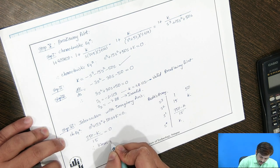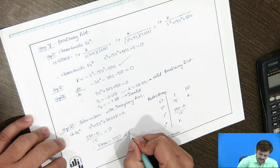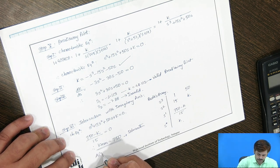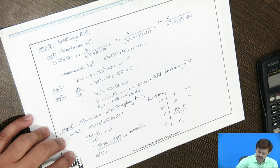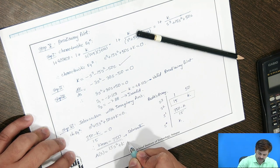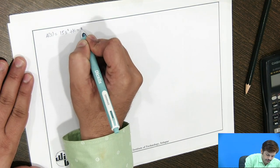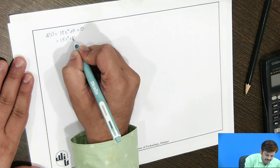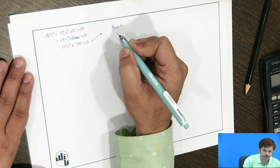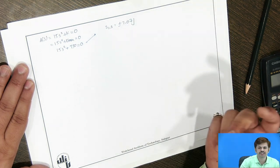Solving gives k_marginal = 750. Since k_marginal is positive, the root locus will have an intersection with the imaginary axis. We then consider the auxiliary equation from the row immediately above, which is 15s² + k = 0. Substituting k = 750 gives 15s² + 750 = 0, yielding two roots: s = ±7.07j, which are the intersection points with the imaginary axis.